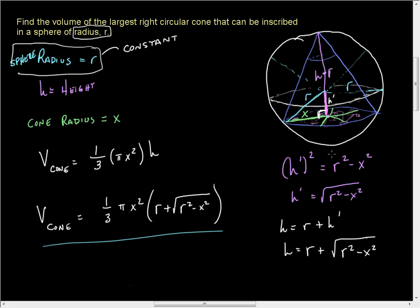It'll lead you in the right direction eventually. And so we use Pythagorean's Theorem to express H as an equation based on R and X, our two known variables, X being, of course, the radius of the cone, and R being the radius of the sphere, which was given to us in the problem.